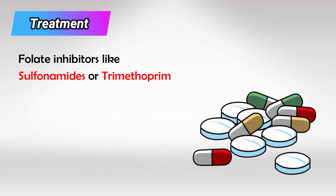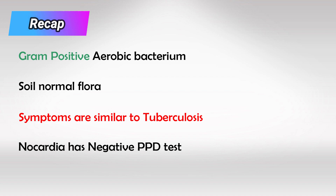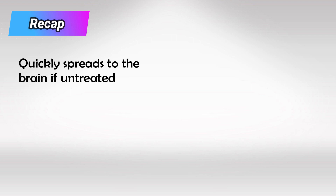To recap: Nocardia is a gram positive aerobic bacteria that closely resembles fungi in structure but TB in presentation. It is acid fast and it loves lung nodules, especially cavitated nodules. It is often misdiagnosed as TB but the PPD test will be negative. If untreated it can spread to the CNS forming ring-enhanced lesions, and we treat it with folate inhibitors.